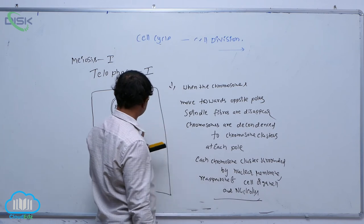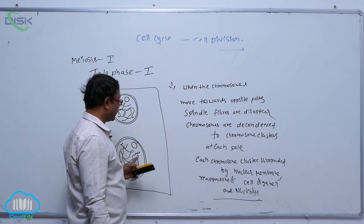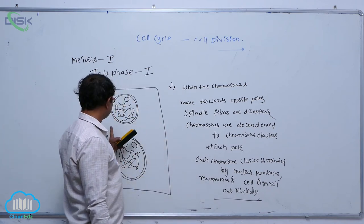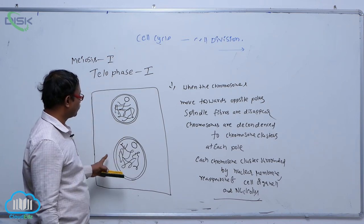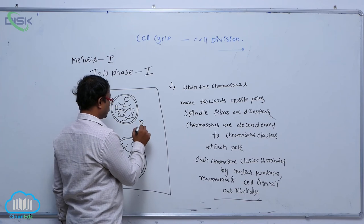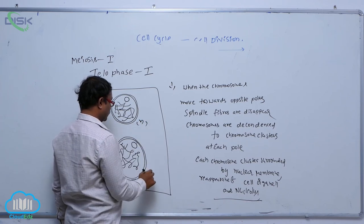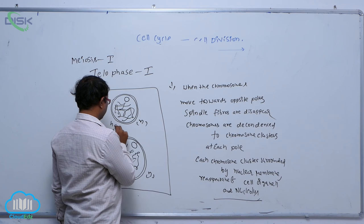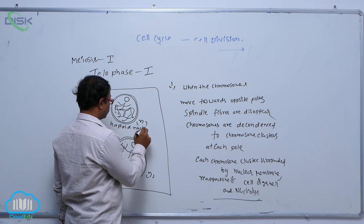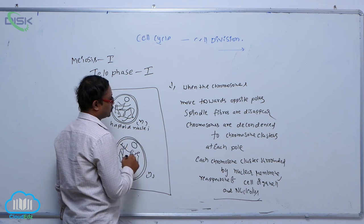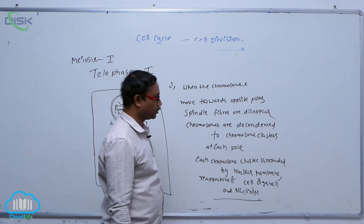This is known as meiosis telophase 1. At the end, each cell produces two nuclei, both in haploid condition.